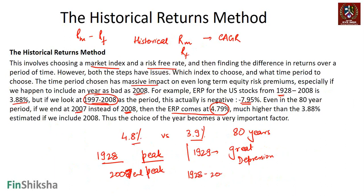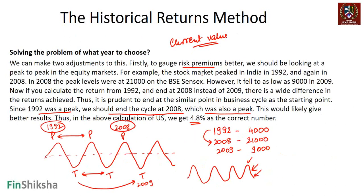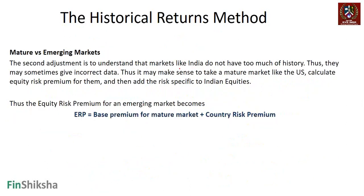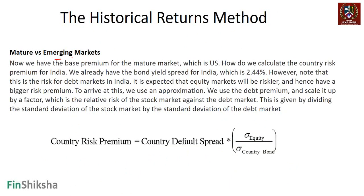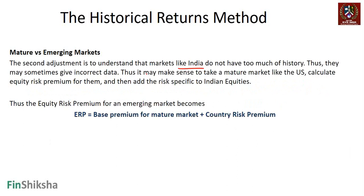Ideally you should look at the 1928 to 2007 period — that 79-year history — which gives 4.8% as the equity risk premium. The second problem is that markets like India do not have much history. The data itself could be incorrect because these are emerging markets, not mature markets. Because these are emerging markets, market movements could be extremely volatile and accentuated, meaning you may not get a correct risk premium value.